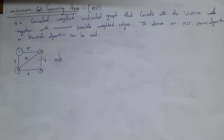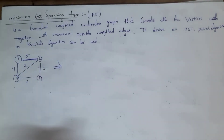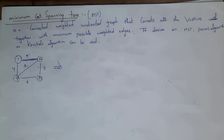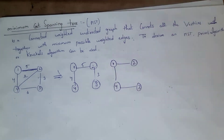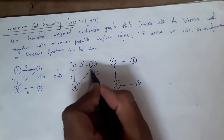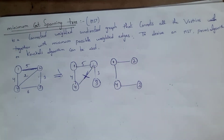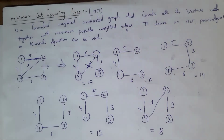Now let us discuss what is a minimum cost spanning tree. A minimum cost spanning tree is a spanning tree that contains minimum weighted edges. For example, this graph has weights on each edge. We need to find all possible spanning trees and then determine which has the minimum total cost. For this graph, the possible spanning trees can be enumerated — if connecting two vertices forms a cycle, we ignore that edge.